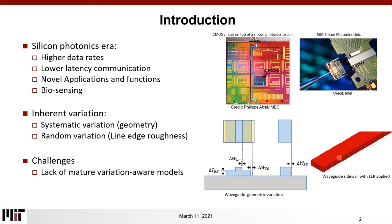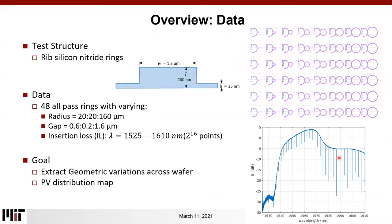A starting step for developing these variation-aware models is the knowledge of the process variation distribution map across the wafer. This is basically what we will present today — we try to get a sense of the process variation distribution map across the wafer. To do so, we started with a test structure, which is a silicon nitride ring resonator, as shown here.